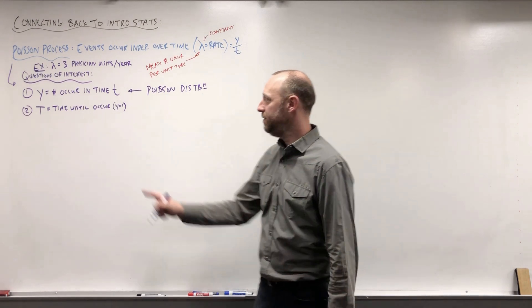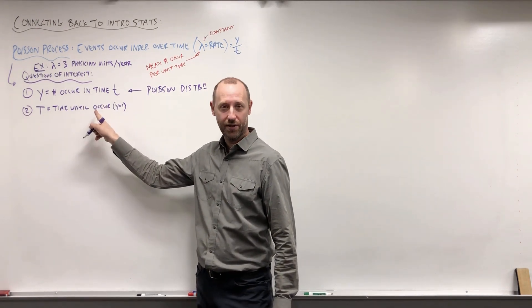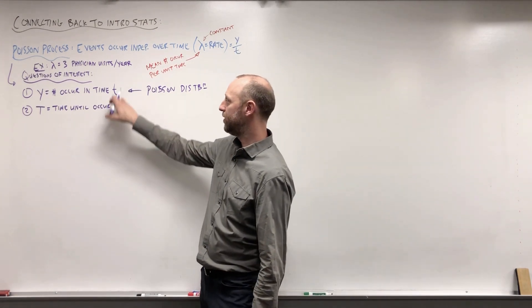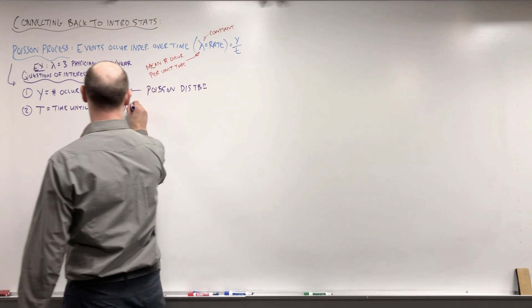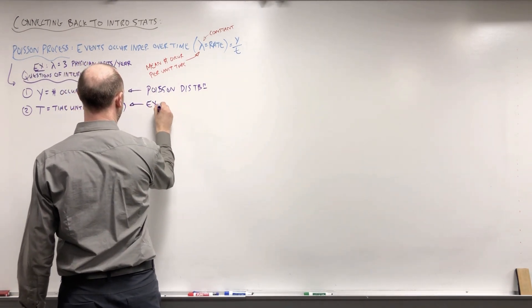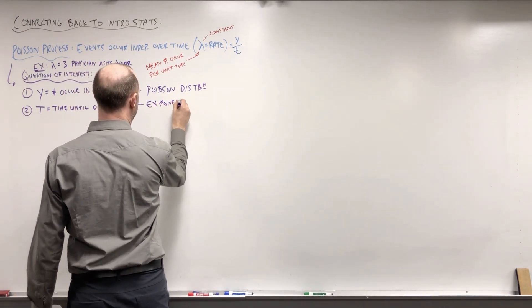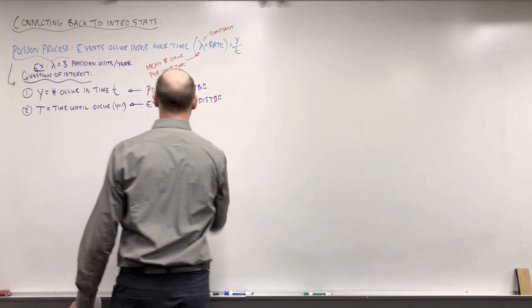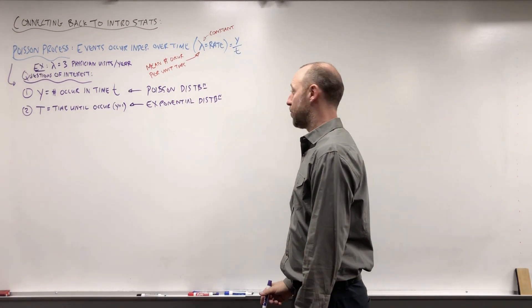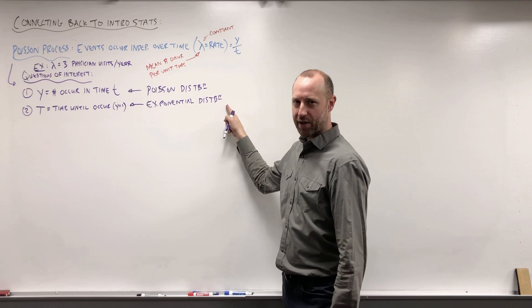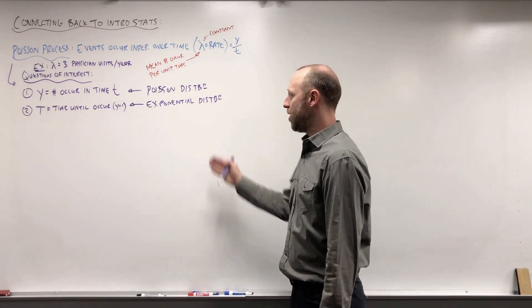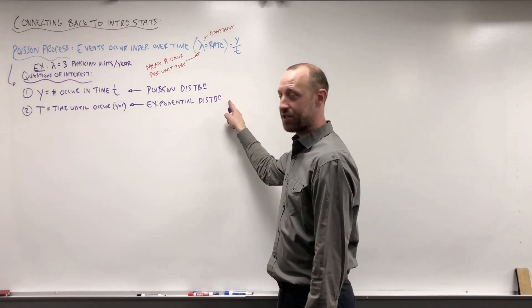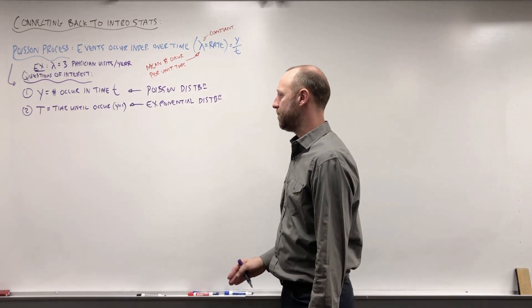The other type of question we can ask is: how much time goes by until the event occurs again? So if I start counting now, how long until someone goes to see a physician? This gives rise to the exponential random variable, which we use the exponential probability distribution for. These are both theoretical probability distributions, very much like the normal distribution, and they are also very much connected to each other.